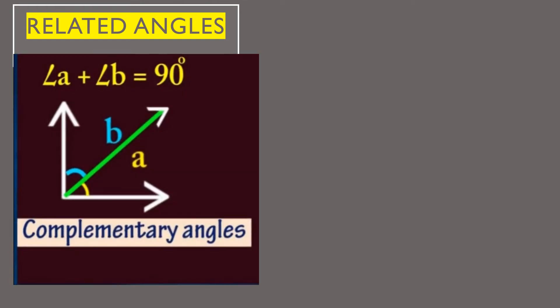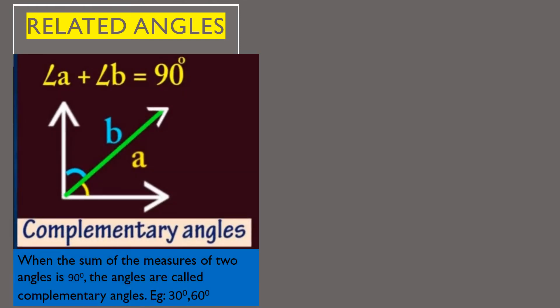Now let us see what related angles are. We can see some relation between a pair of angles. When the sum of the measures of two angles is 90 degrees, the angles are called complementary angles. Whenever two angles are complementary, each angle is said to be the complement of the other. For example, 30 degrees and 60 degrees are complements of each other — the complement of 30 is 60, and the complement of 60 degrees is 30 degrees.